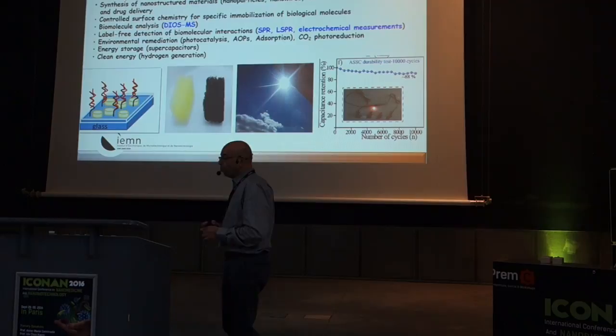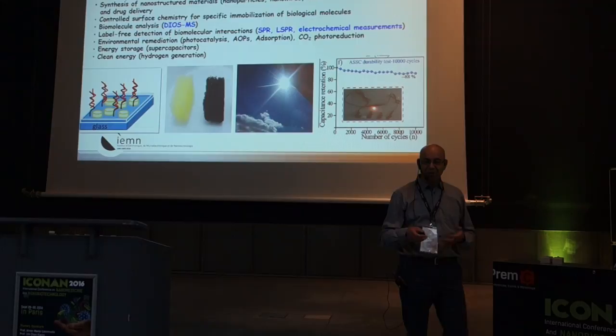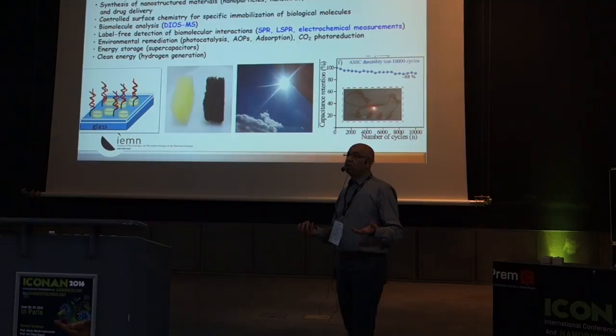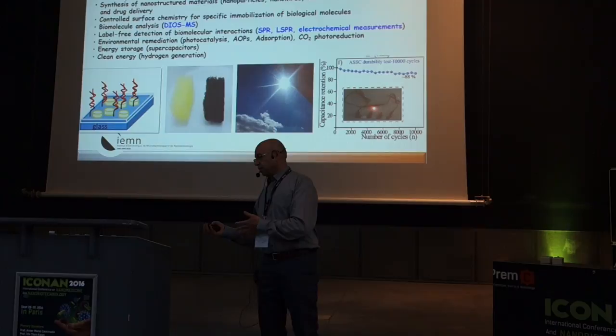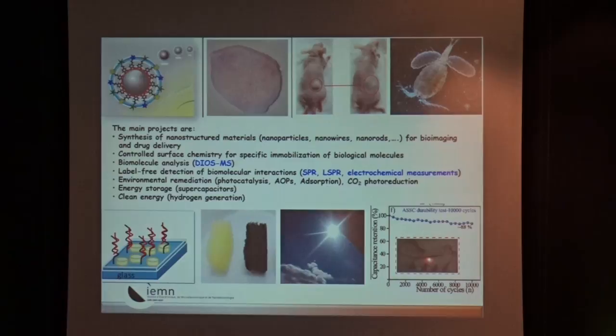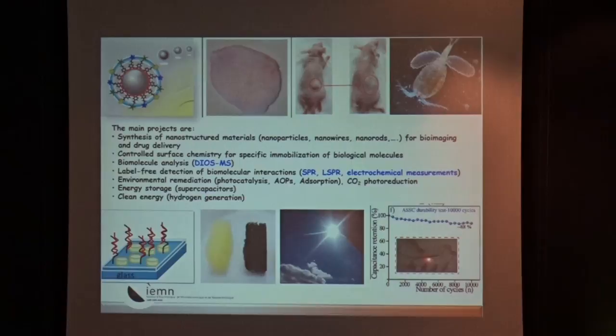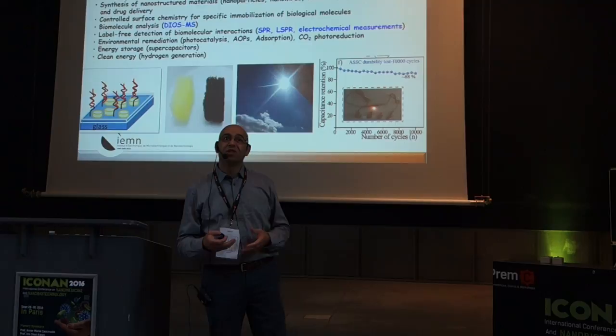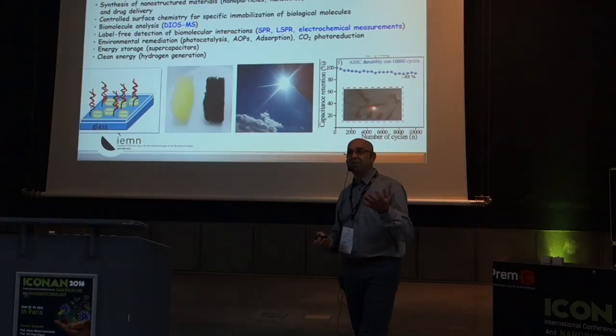In my group, we focus on the synthesis of nanomaterials — or even macro scale as well — and also surface chemistry. We have expertise in surface chemistry: how to add functionality onto these nanomaterials with the aim of different applications. If you look at the bottom, it's biosensing using optical techniques like SPR or localized surface plasmon resonance, but also electrochemistry or analysis using desorption ionization on nanostructured materials. There's also a surface cohesion sponge for environmental remediation, since a lot of antibiotics or drugs will end up one day in water and you have to deal with them as environmental pollutants.